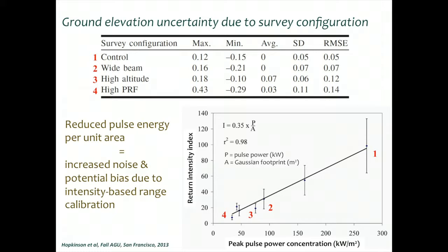Here's an illustration of how survey configuration can alter the accuracy of the point cloud at ground level for an unambiguous surface like a parking lot, runway, or control surface. We have a control survey configuration as a baseline. Configuration two widens the beam, which essentially widens the footprint of the laser pulse. Configuration three keeps all else equal but flies higher. Configuration four keeps all else equal but flies at higher density, increasing repetition frequency from around 33,000 to 100,000 measurements per second.